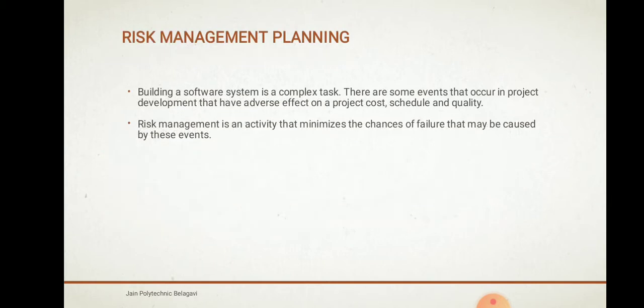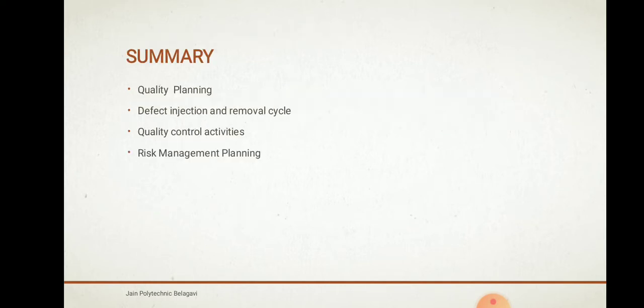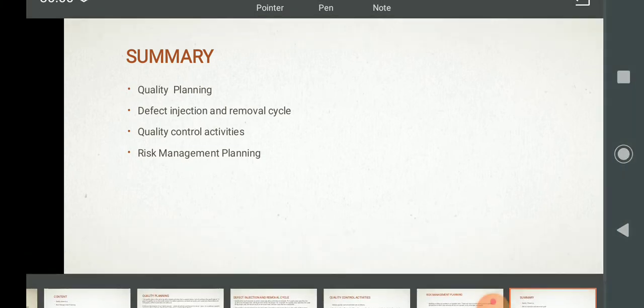Next is risk management planning. Building a system software is a complex task, and there are events that occur in project development that have adverse effects on cost, schedule, and quality. Risk management is an activity that minimizes the chances of failure caused by such events. In this video we have discussed: quality planning, the defect injection and removal cycle, quality control activities, and risk management planning. Thank you.